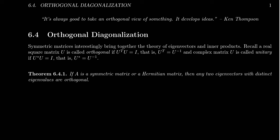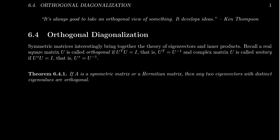Looking at the table of contents in our book, we can see that we are nearly to the end of the book and therefore nearly to the end of our series. We are in the penultimate section, section 6.4 called Orthogonal Diagonalization. This is a pretty fun section because there are a lot of different ideas related to this notion of orthogonal diagonalization.